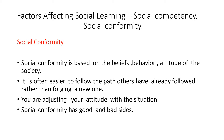Now let's discuss factors affecting social learning — social competency and social conformity. Social conformity: the word itself tells everything. It is about society. Social conformity is based on the beliefs, behavior, and attitude of the society. It is always easier to follow the path others have made rather than creating a new one. For example, in society there are many people who are teachers, engineers, and doctors — these are the paths followed by many. But when you try to follow a path where others have not tried, you will find many challenges and difficulties.